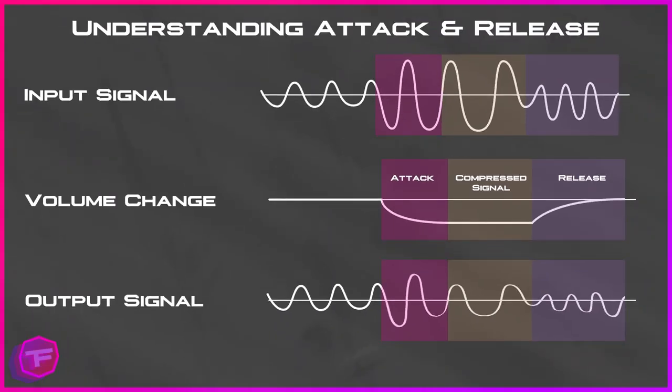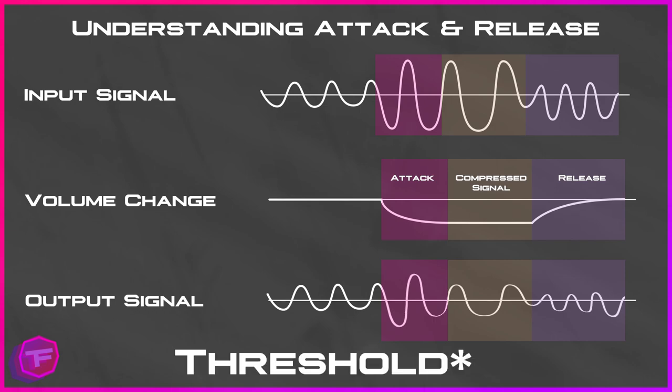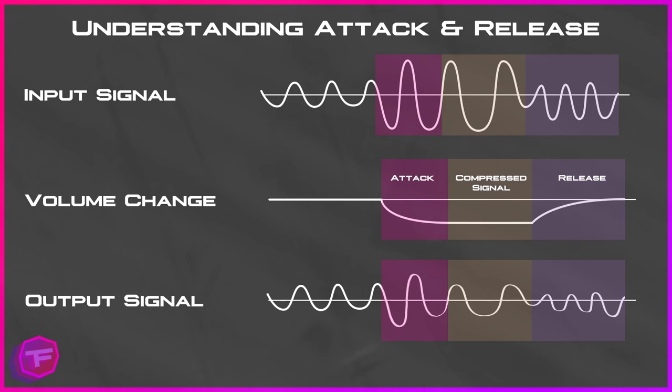The next thing we need to talk about is the attack and release time. On the graph in front of you is an example of attack and release. At the top is the input signal without any compression applied. Below that are two examples: a volume change example and an audio signal example. In the volume change example, once the audio signal hits the attack range, the attack time is how quickly the compression is being applied until it reaches the compressed signal level.